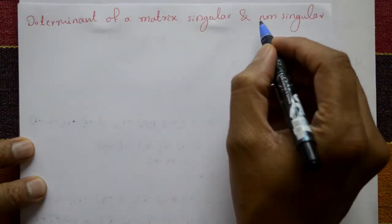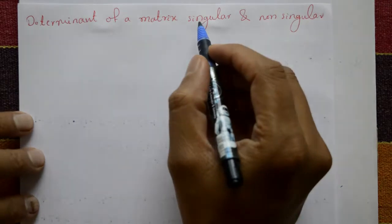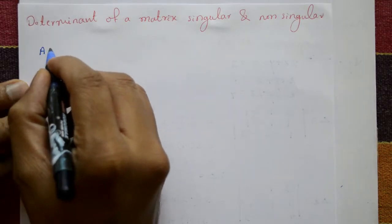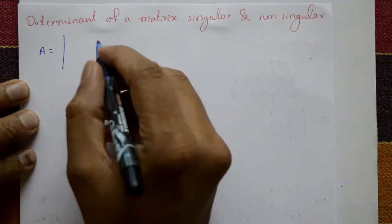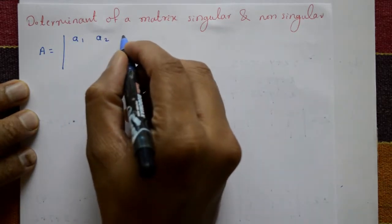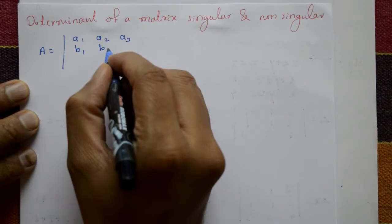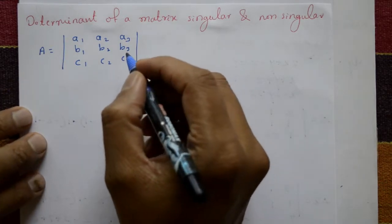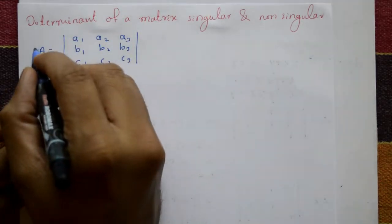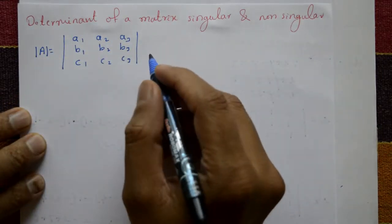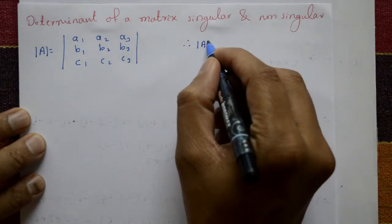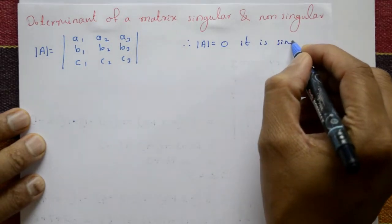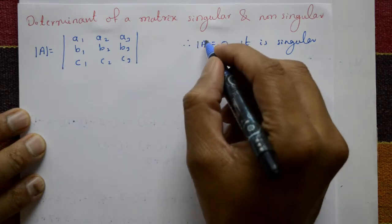The determinant of a matrix — singular and non-singular. Given matrix A with elements A1, A2, A3 in the first row, B1, B2, B3 in the second row, and C1, C2, C3 in the third row, when you expand this determinant and get the determinant of A equal to 0, that is called a singular matrix.